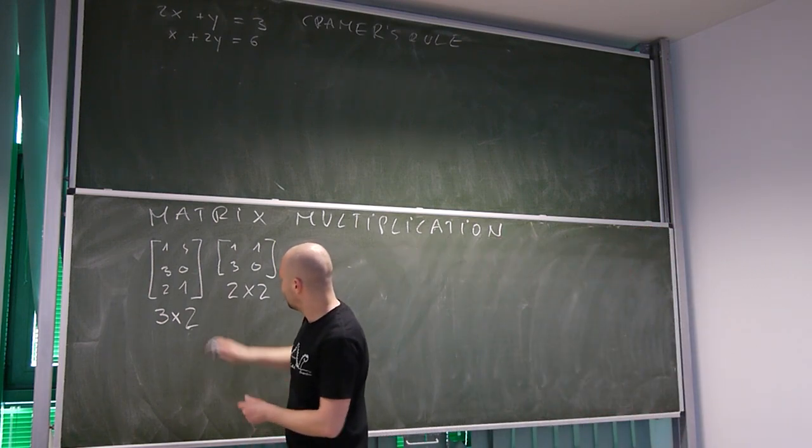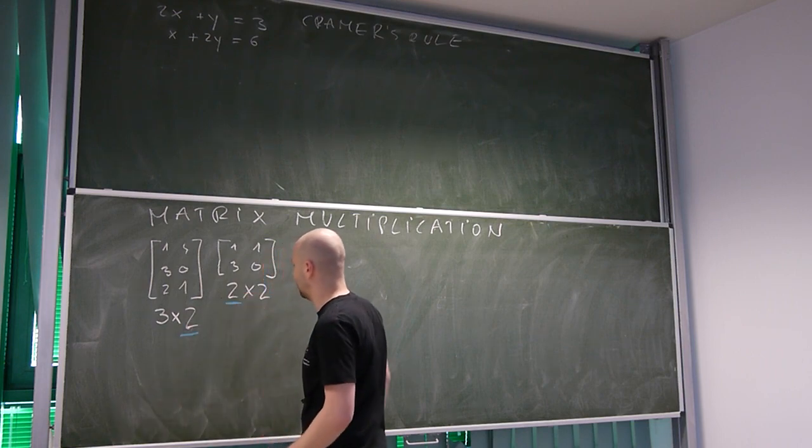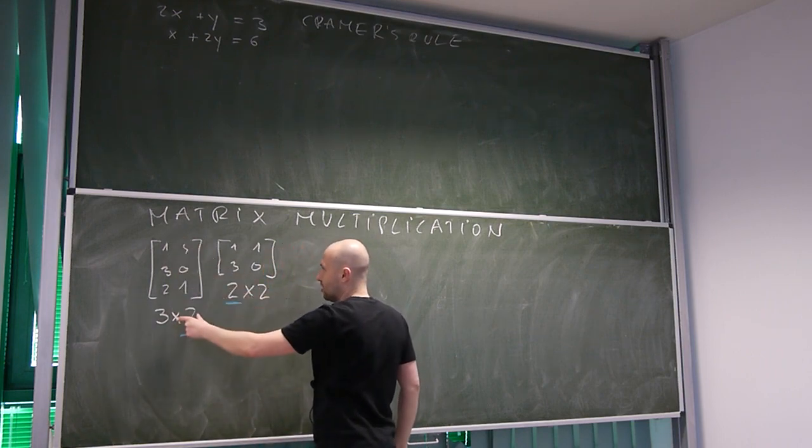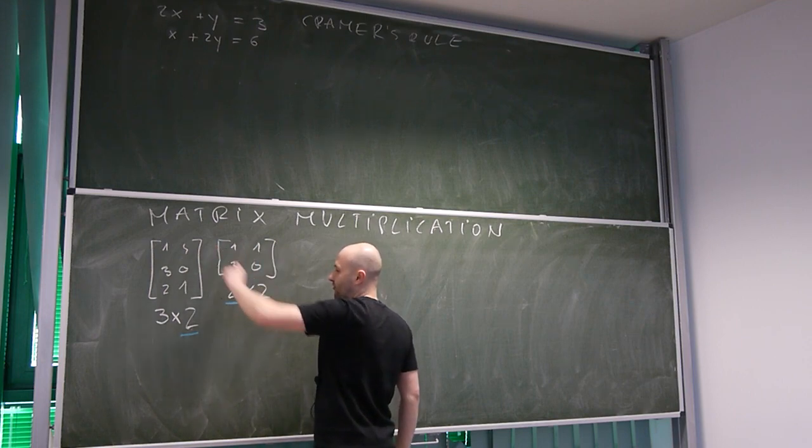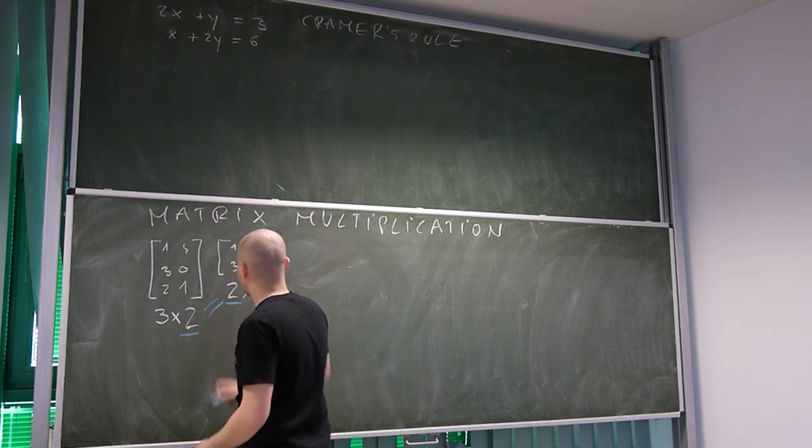Why? Because the number of columns in the first matrix and number of rows in the second matrix are the same.